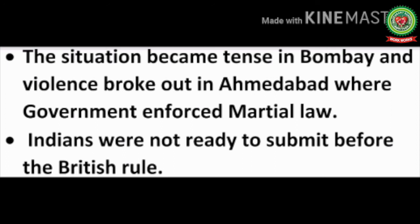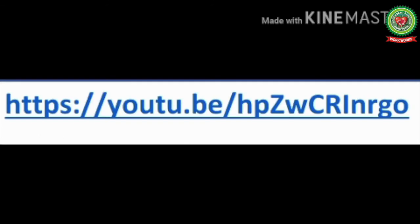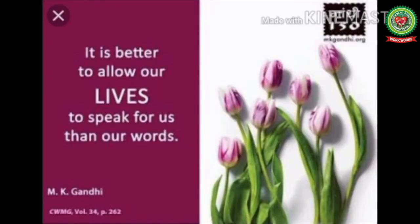These are the questions covered in this module: What do you mean by Satyagraha? How is Satyagraha different from passive resistance? Why were the peasants of Champaran forced to grow indigo? What were the demands of the mill workers of Ahmedabad? And why did the Indians protest the Rowlatt Act? If you want to explore more, there is a link on your screen. The session has been covered with the help of this explanation — you are advised to make notes of the above topic. We'll meet in the next session; till then, have a nice day.